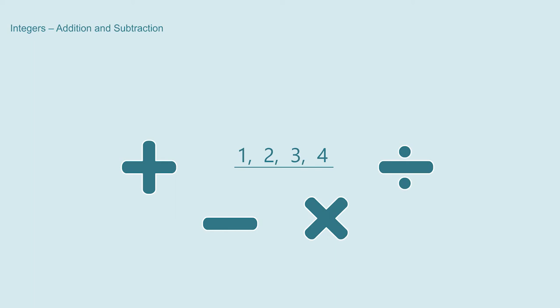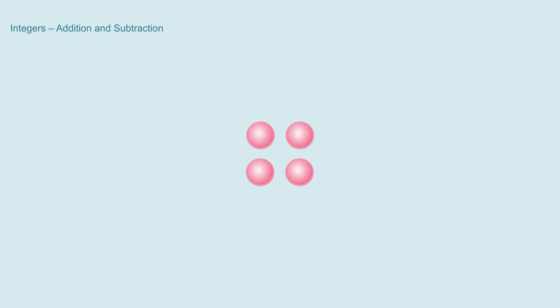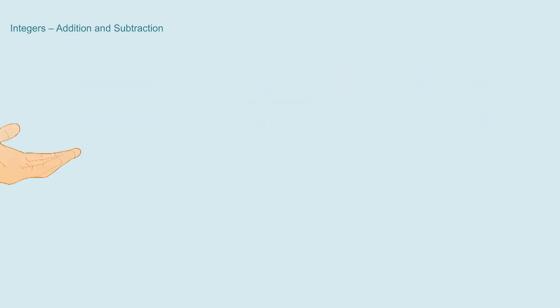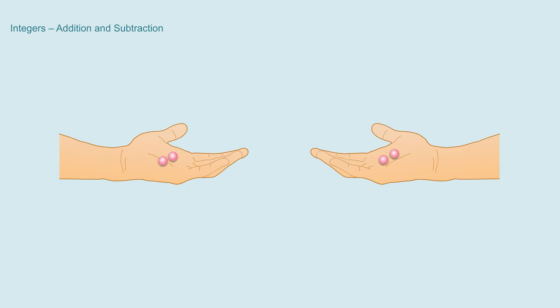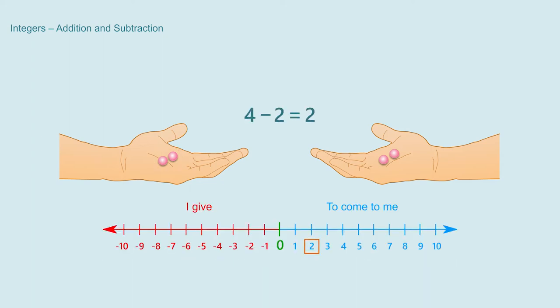You know that the sum of natural numbers is a natural number. For example, if I have 4 beads and I get 2 more beads then there will be totally 6 beads with me. We show this as 4 plus 2 equal to 6. Similarly, let us see subtraction. If I give 2 beads from the 4 beads I have to my friend then I will have only 2 beads left with me. We show this as 4 minus 2 equal to 2. So the answer comes again as a natural number.